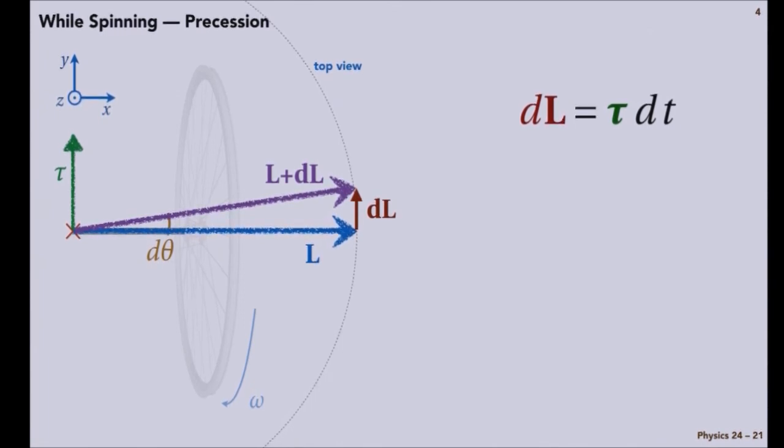So what we're actually going to look for is the rate at which the angle theta that describes the direction L points in is changing with time. So see if you can cook up an expression for d theta dt.